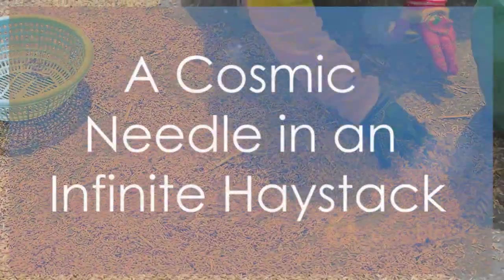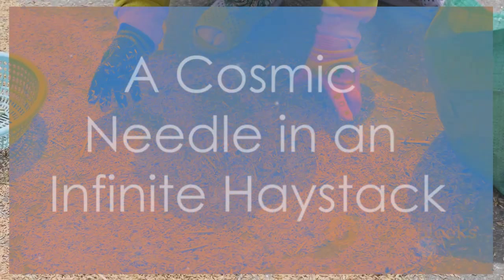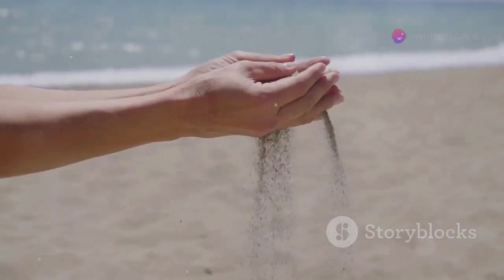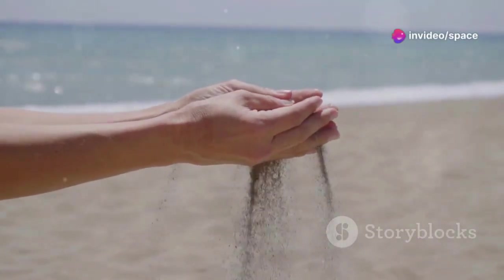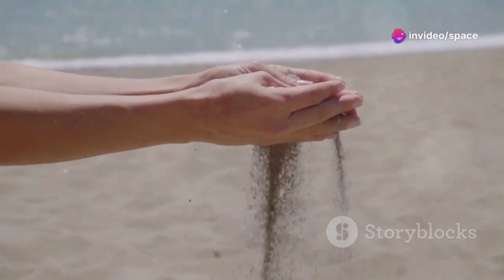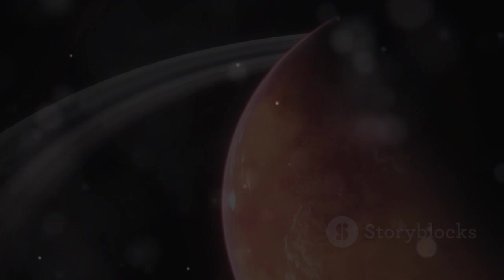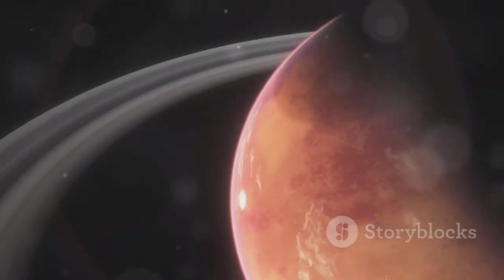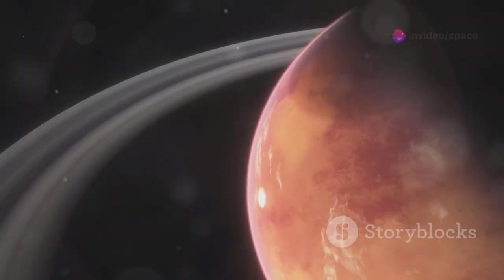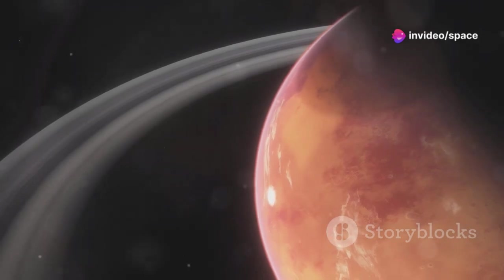Picture trying to locate a single grain of sand among all the beaches on Earth. The task seems impossible, doesn't it? Each grain is tiny, almost identical to the next, and the beaches stretch endlessly, a vast ocean of minuscule particles. That's how challenging it is to find a rogue planet. These planets drift through the cosmos, untethered to any star, making them incredibly elusive.